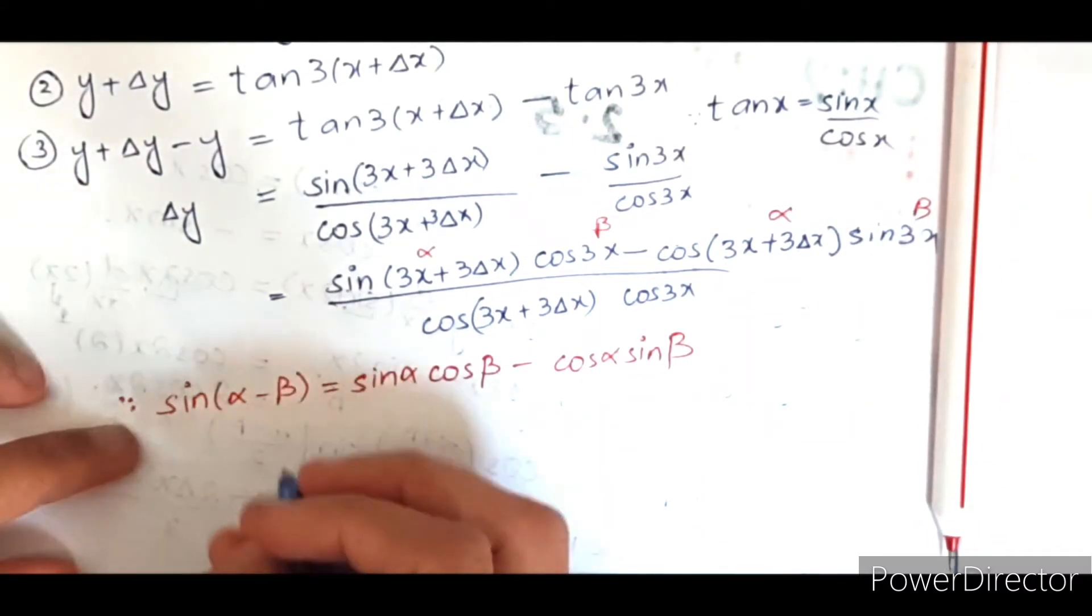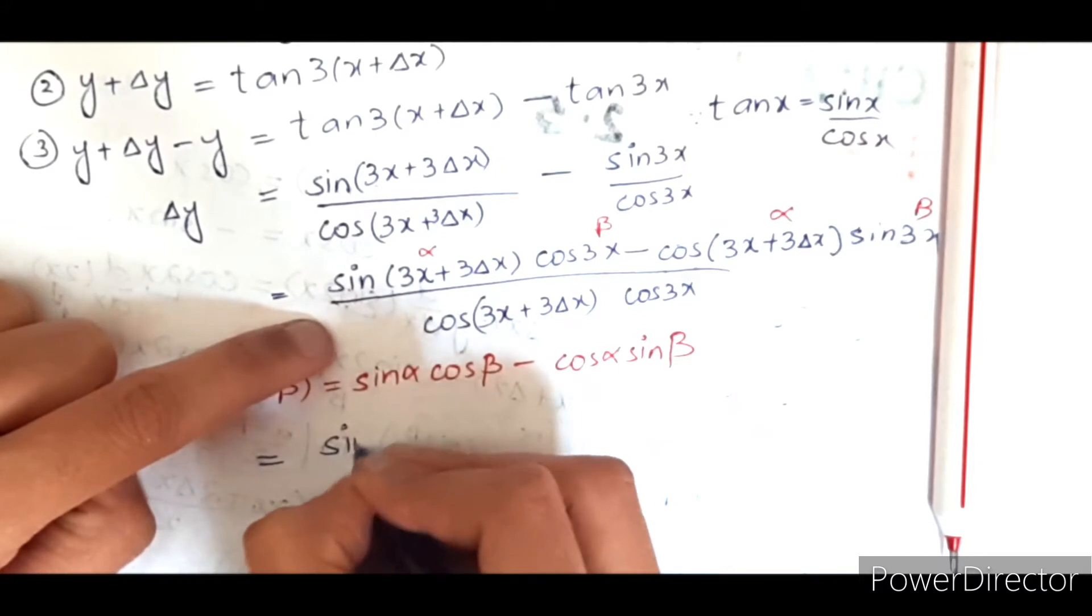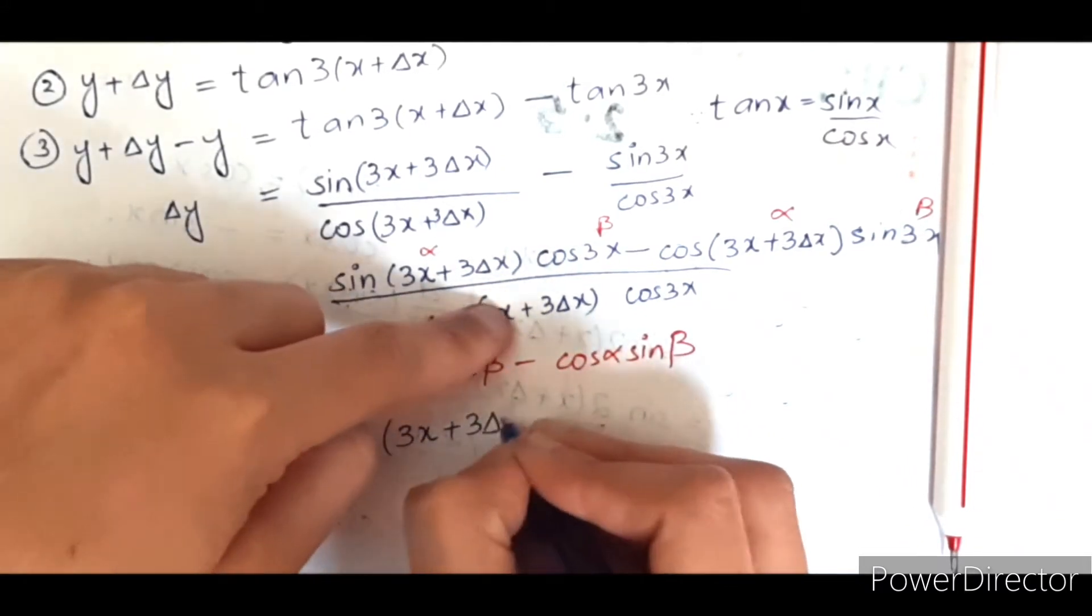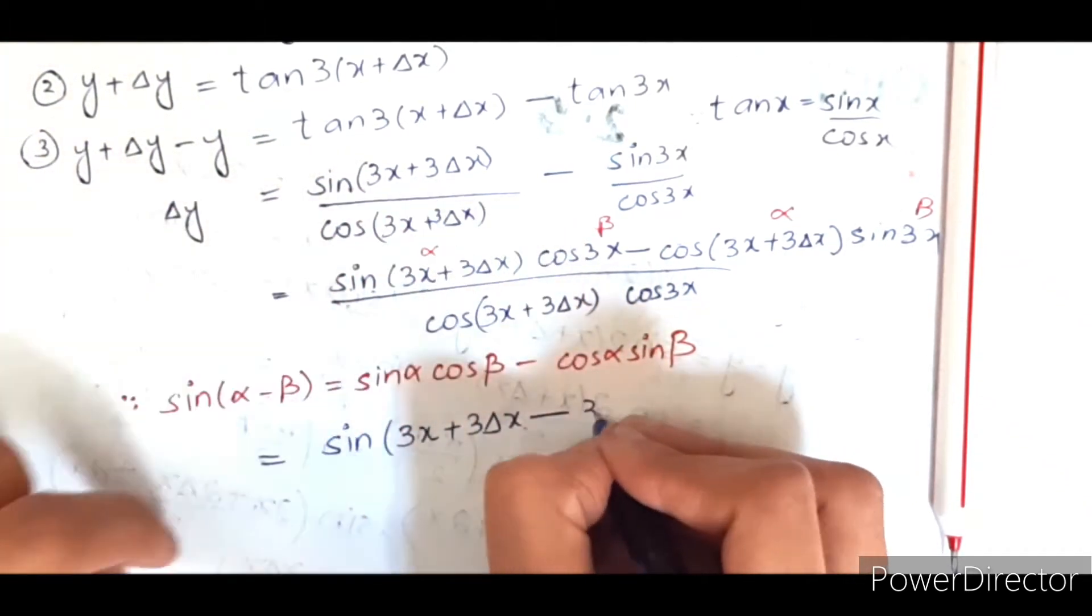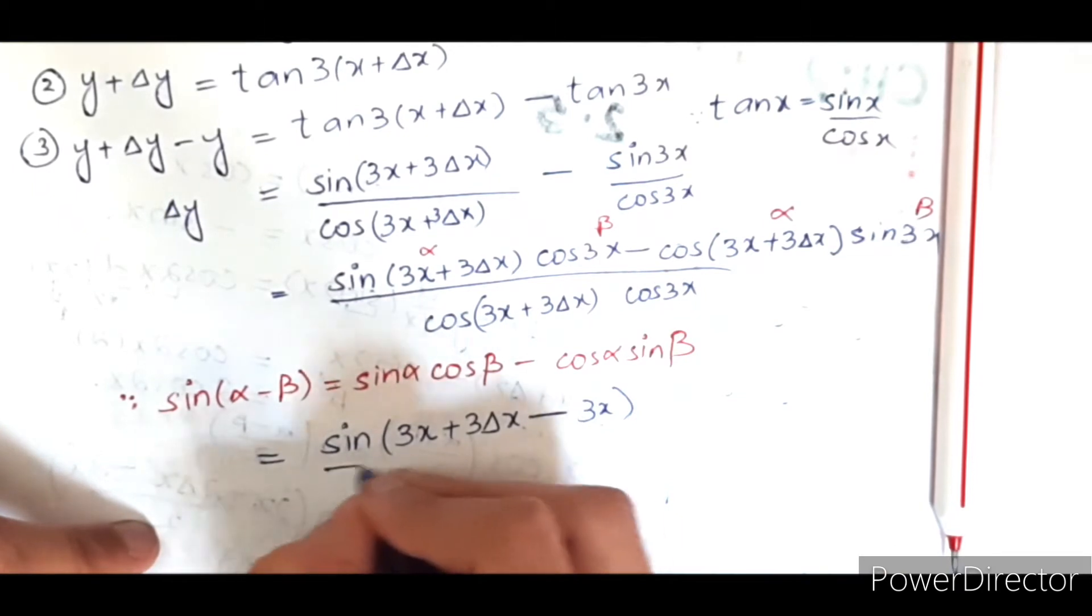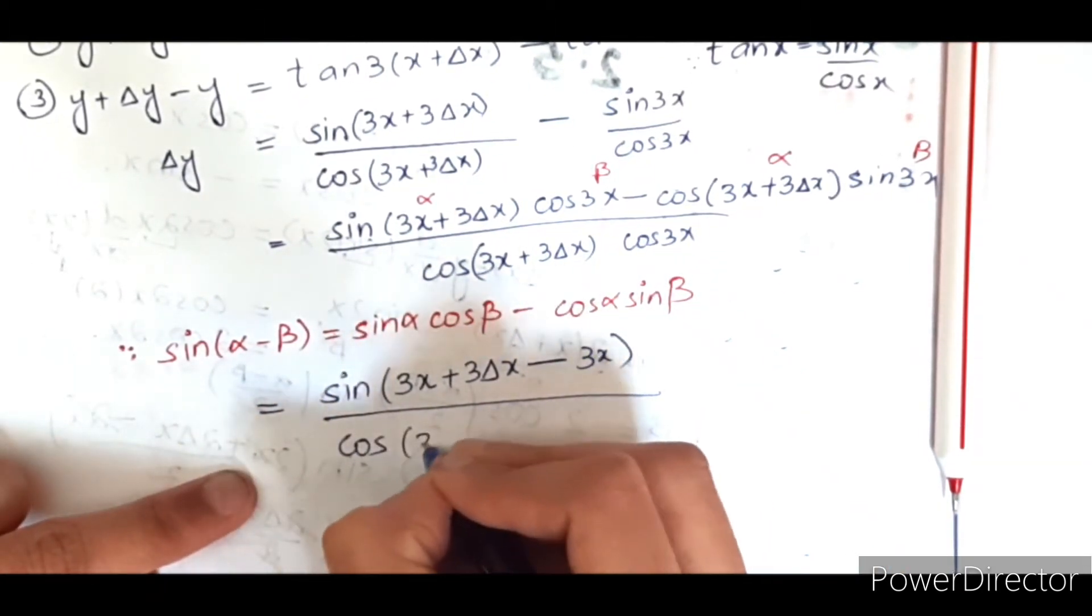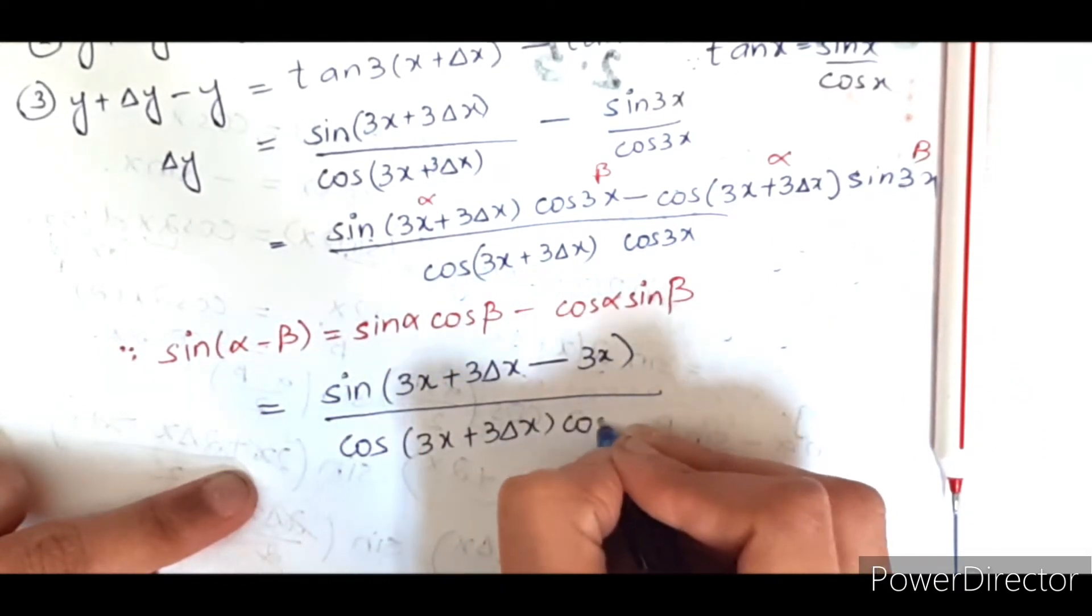So we are going to open it. Here will be sin alpha minus beta, where alpha is 3x plus 3 del x and beta is 3x, divided by the denominator, which is the same: cos 3x plus 3 del x into cos 3x.